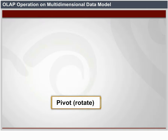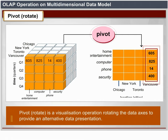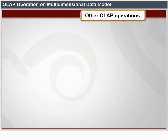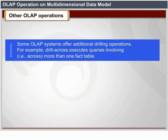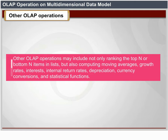Pivot (also called rotate) is a visualization operation that rotates the data axes in view to provide an alternative data presentation. Other examples include rotating the axes in a 3D cube or transforming a 3D cube into a series of 2D planes. Some OLAP systems offer additional drilling operations: drill-across executes queries involving more than one fact table; the drill-through operation uses relational SQL facilities to drill through the bottom level of a data cube down to its back-end relational tables. Other OLAP operations may include ranking top/bottom items, computing moving averages, growth rates, interests, internal return rates, depreciation and currency conversions.